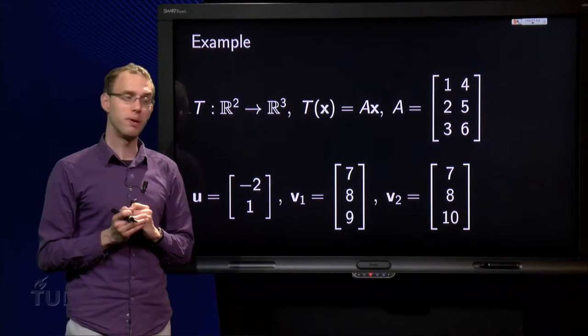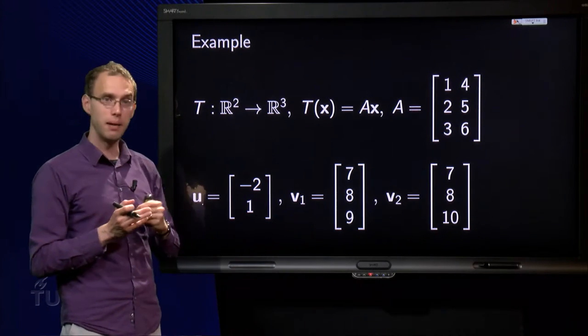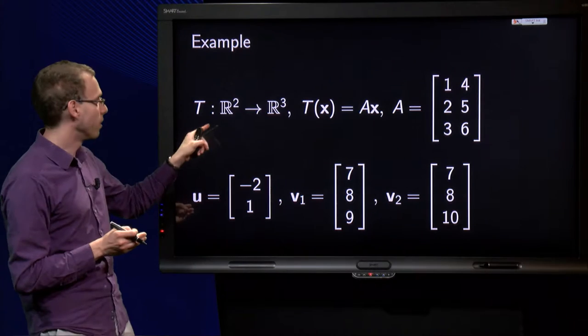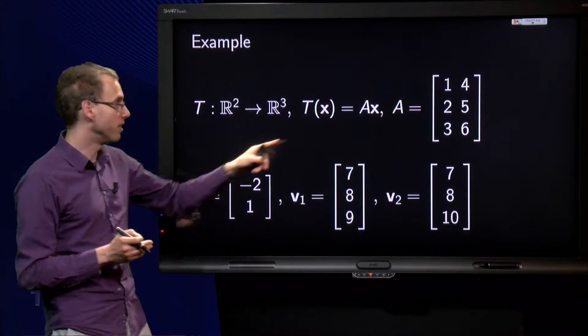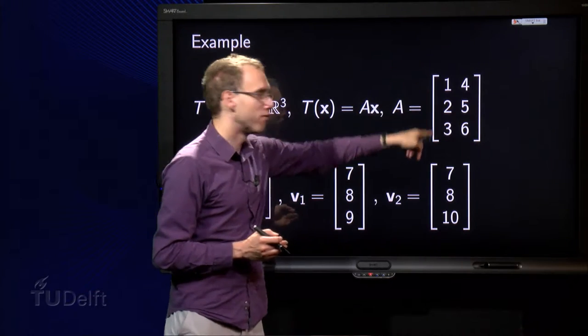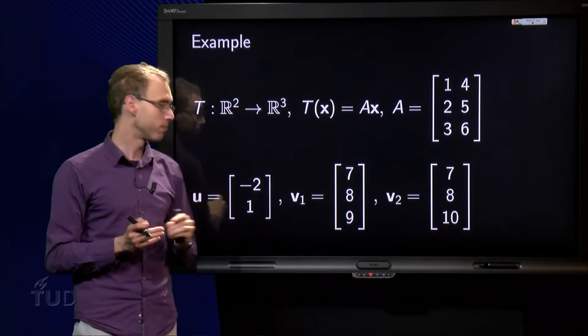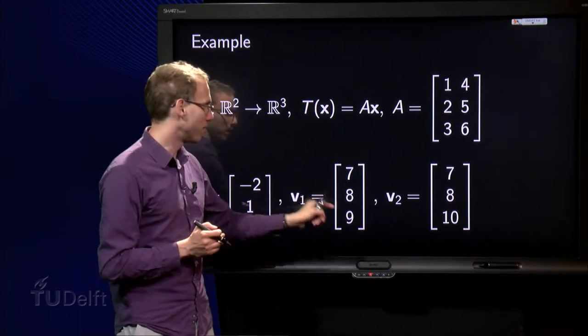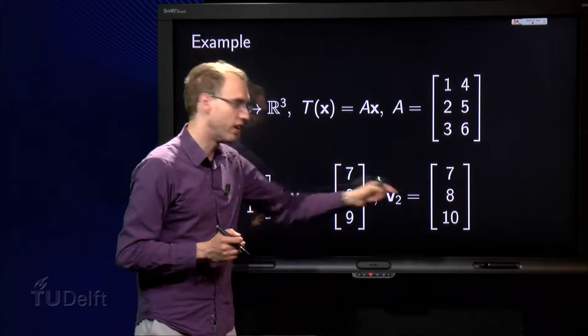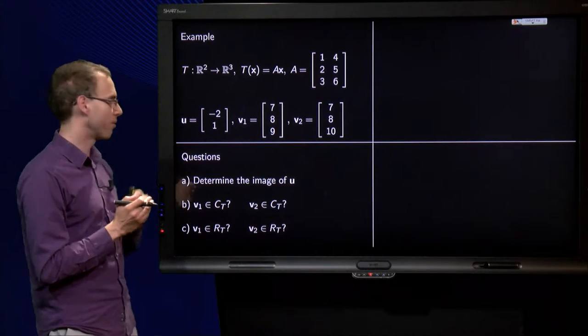Let us look at a transformation from R^2 to R^3, transformation implemented by matrix A. So we go from R^2 to R^3, that means we need a 3 by 2 matrix A, with entries 1, 4, 2, 5, 3, 6. And we look at a few vectors: u equals [-2, 1], v1 equals [7, 8, 9], and v2 equals [7, 8, 10].